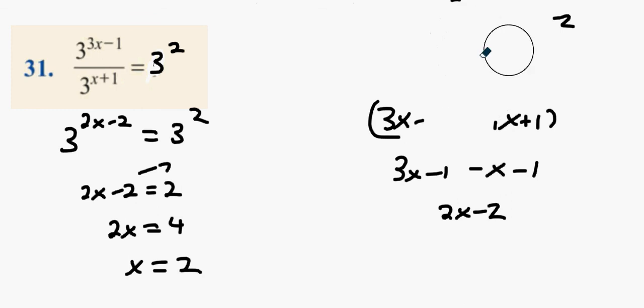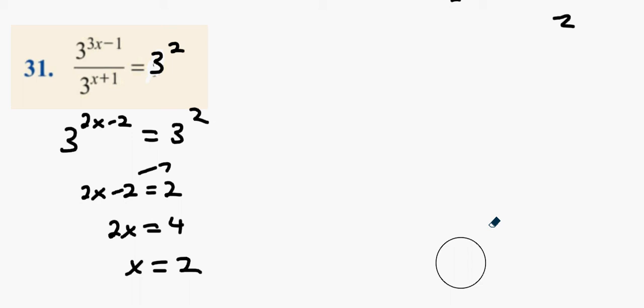Instead of looking at me going 'oh look at me I'm finished, I'm amazing,' you could actually save yourself a bit of marks by subbing it back in. So what's three times two take away one? Two times two take away one is three to power five. And what's two plus one? What's three power five divided by three to power three? And you know you have the perfect answer, don't you? Everything's cool.